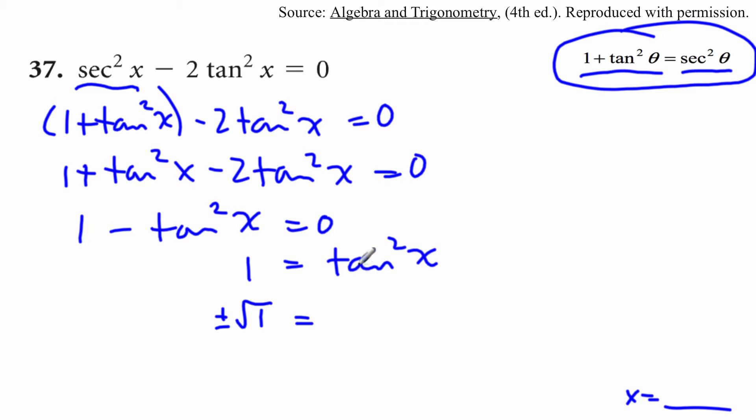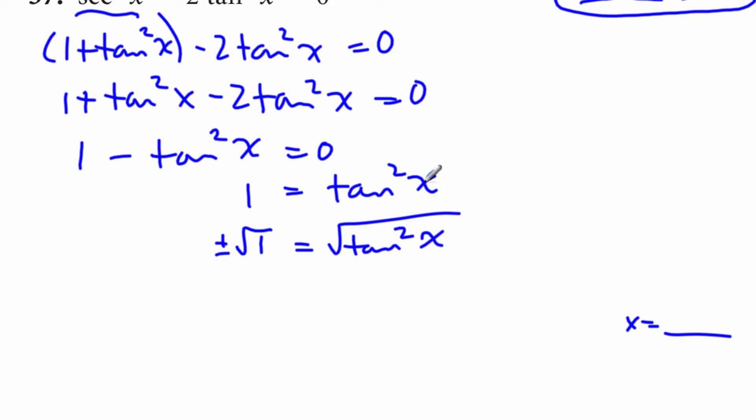So maybe I'll write it as square root of 1, we'll change that in a second. And then this, the square root of that, I'll write it. Basically, I just took the thing above and square root of both sides. So here I'll have plus or minus 1 is equal to tan x.